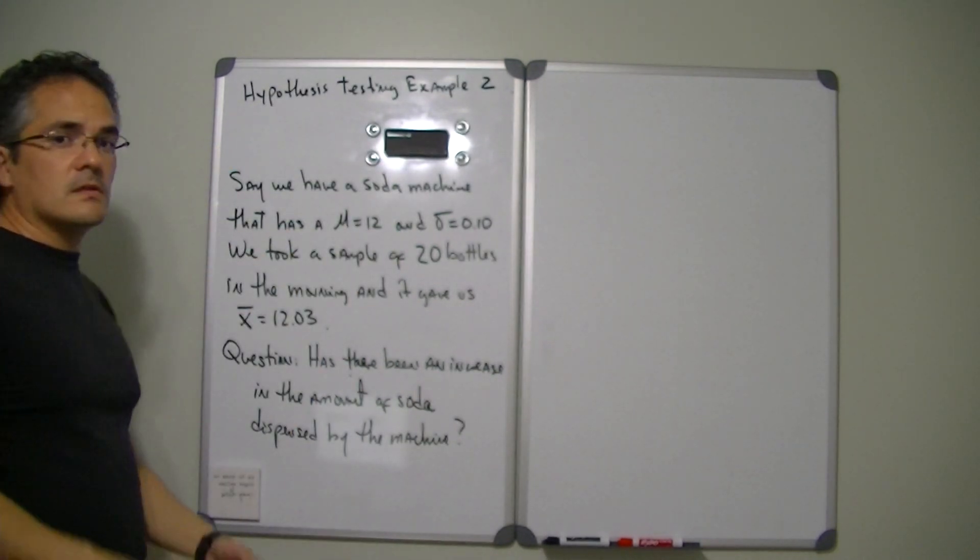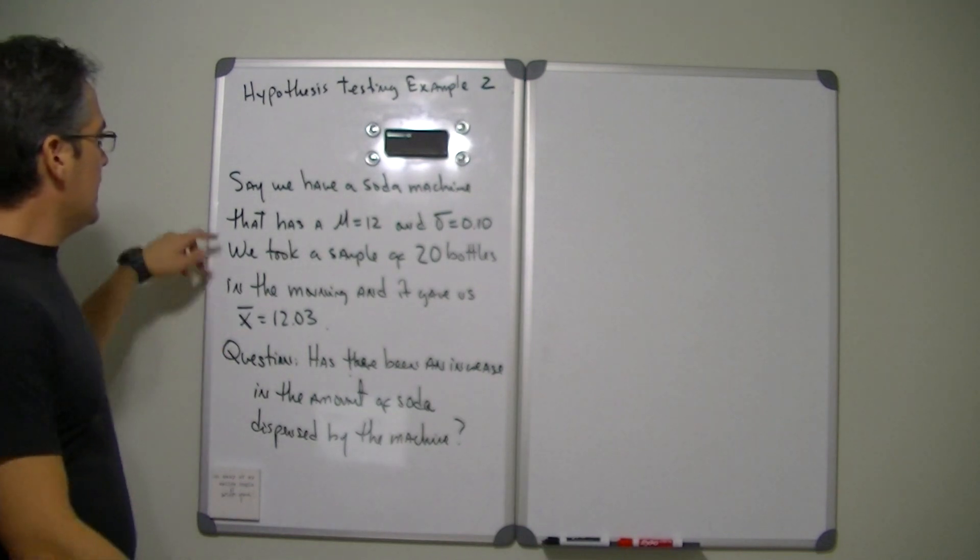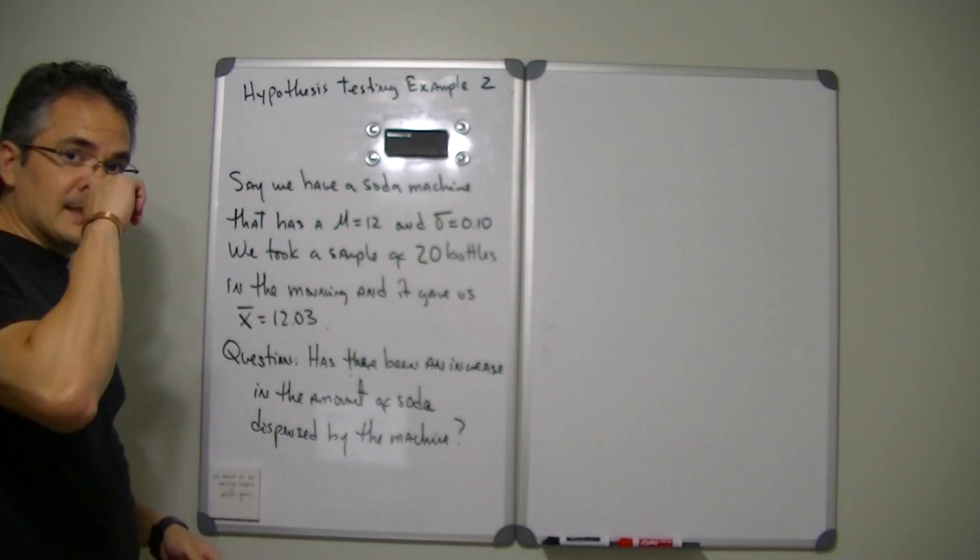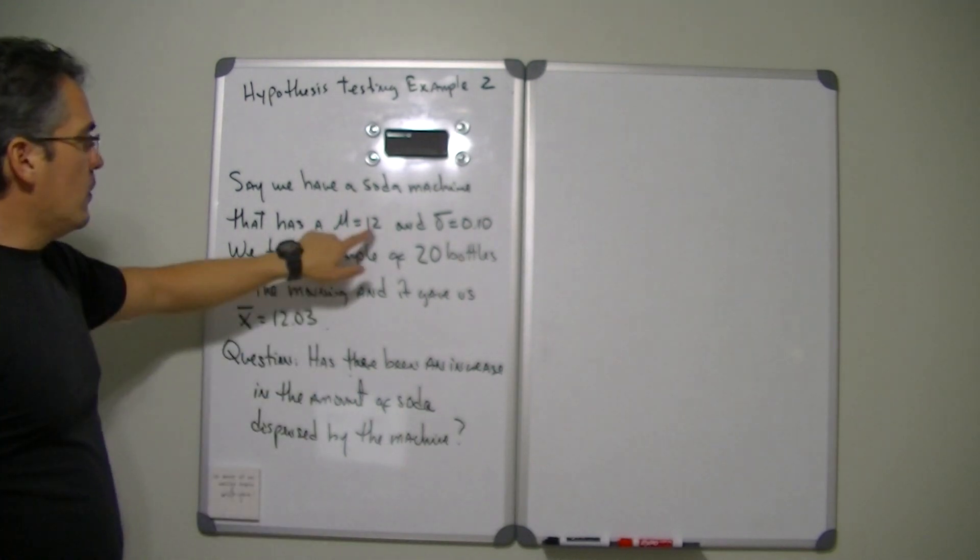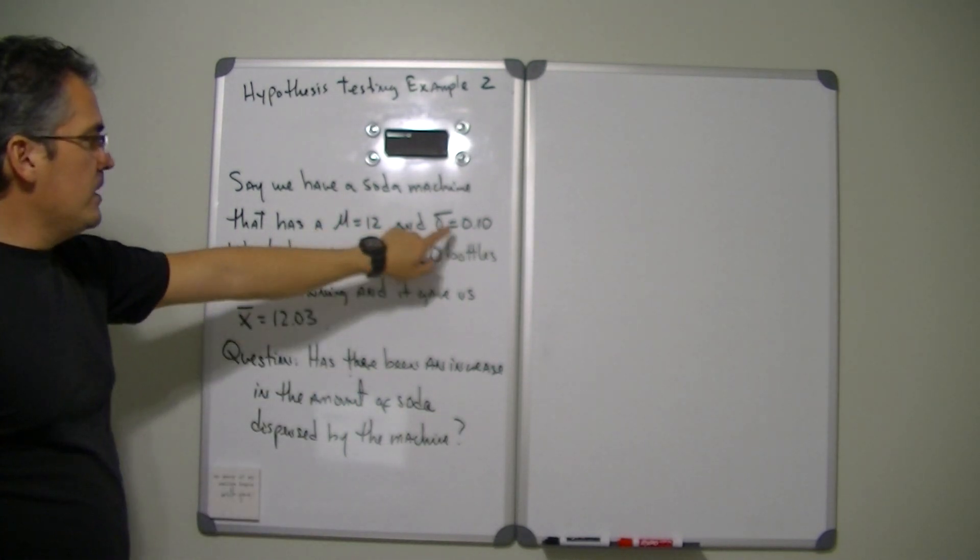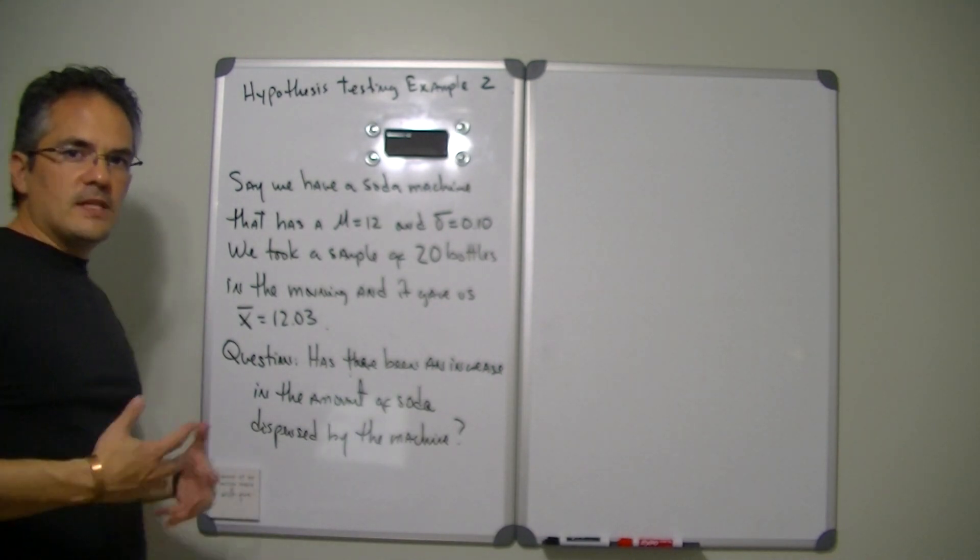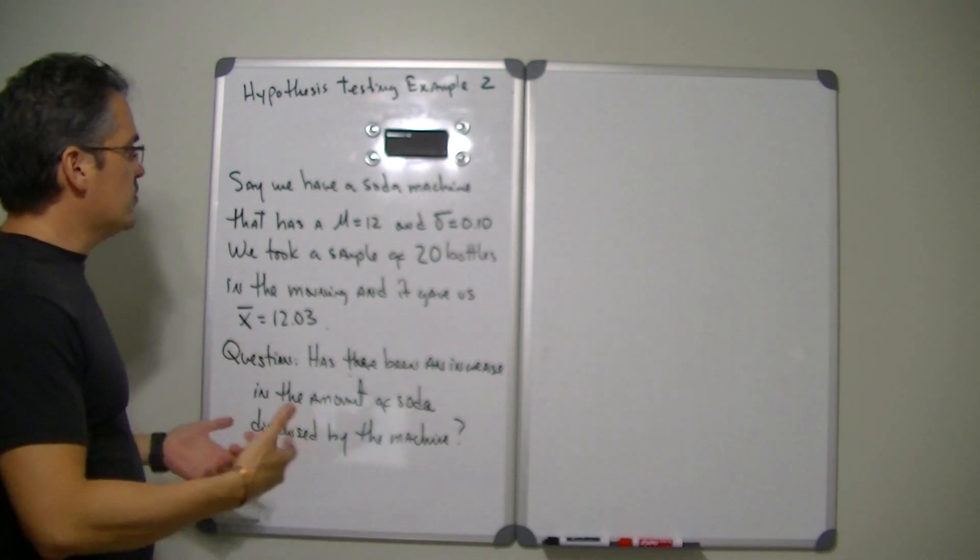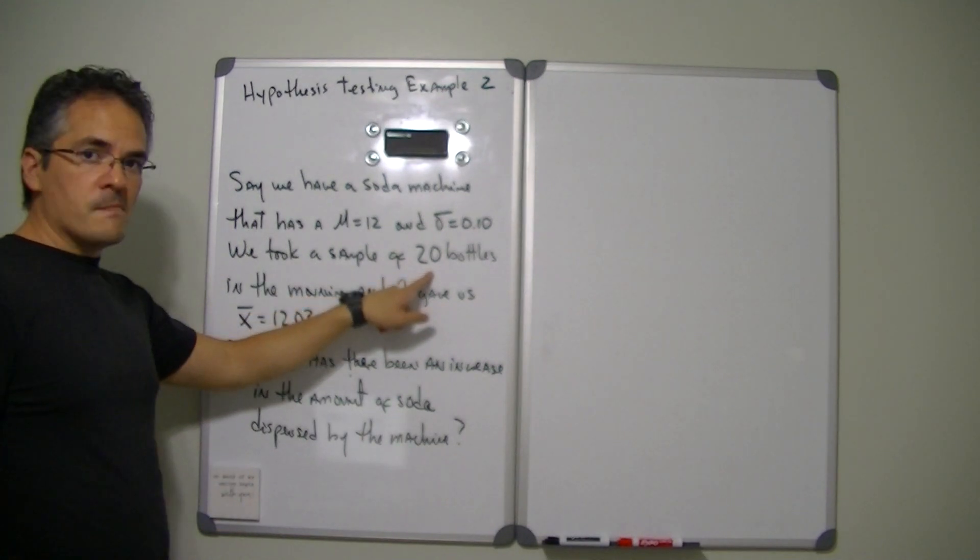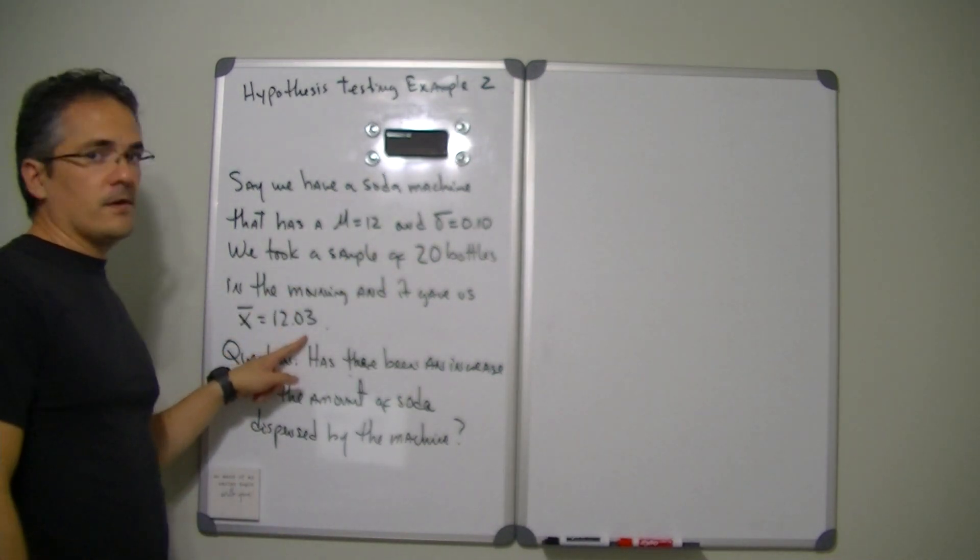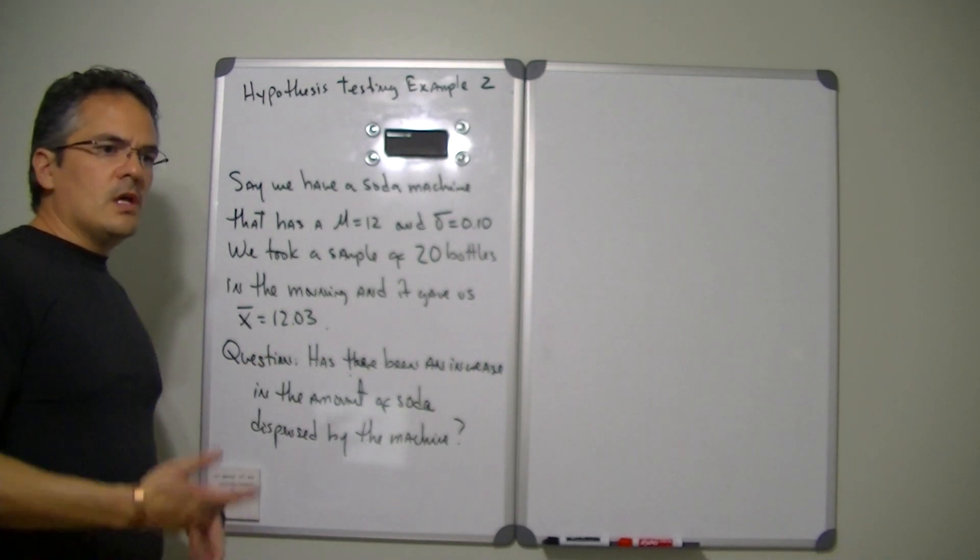Let's say that we have a soda machine that produces soda bottles, and that machine has a mean distribution of ounces inside the soda bottle of 12 ounces with a sigma of 0.10. Now in order to test the machine in the morning you took a sample of 20 bottles and you notice that that sample gave you a mean of 12.03.